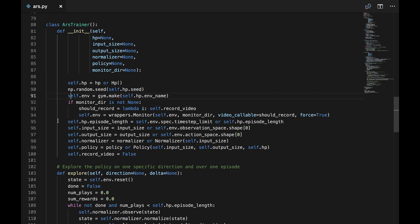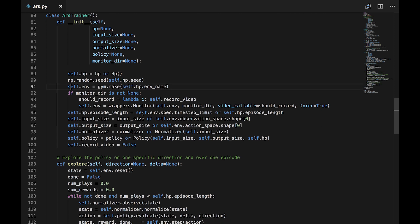Wrappers.Monitor allows us to record periodic videos of the robot in action. Monitor dir is a folder where the video files will be saved. Video callable is a function which determines whether to record a given episode returning true or false. The force option will delete all existing files there if it's set to true.